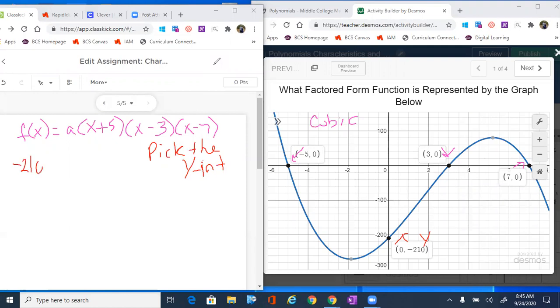So negative 210 equals to a, and wherever I see an x, I'm gonna put that value of zero. So zero plus five, zero minus three and zero minus seven. And I love using the y-intercepts because the math is nice and easy, comes out nice and clean.